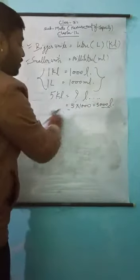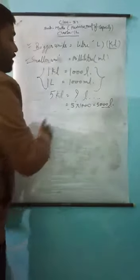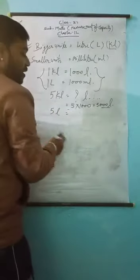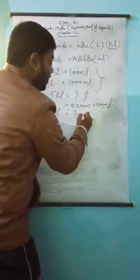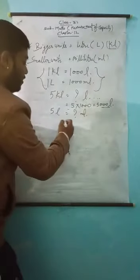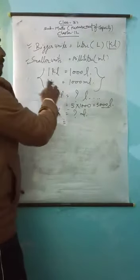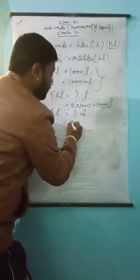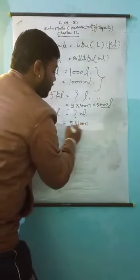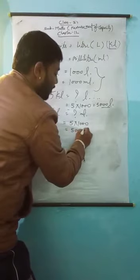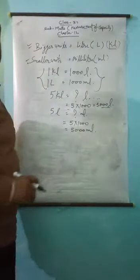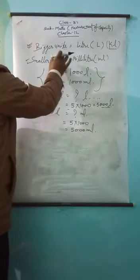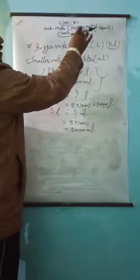Now suppose someone gives five liters and asks how many milliliters that is. We use the same formula: one liter is equal to one thousand milliliters, so five multiplied by one thousand equals five thousand milliliters. This is the formula for converting bigger units to smaller units.